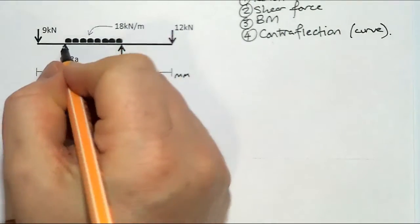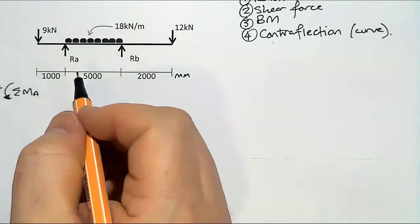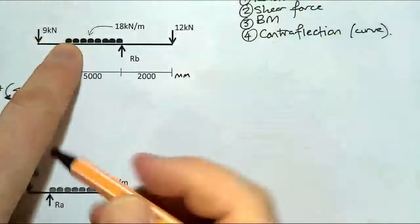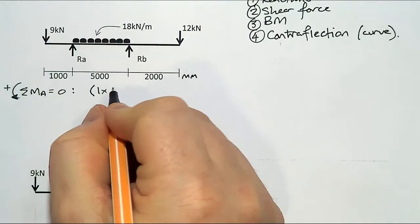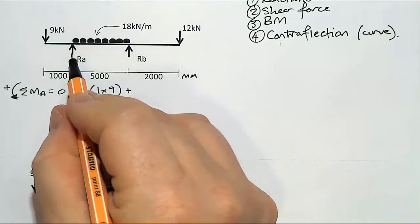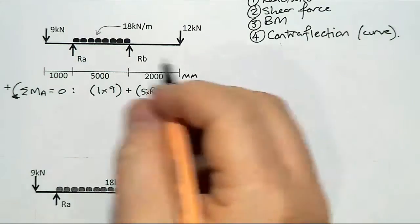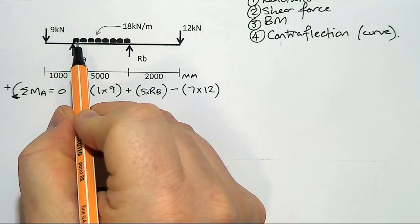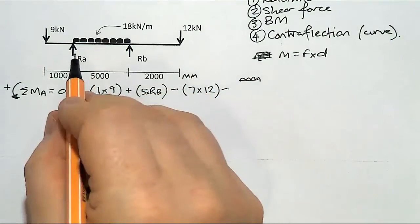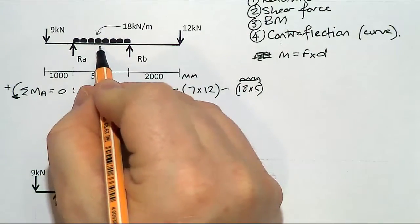For the reactions, I'll take moments around A, and I'm going to say that everything going anticlockwise is positive. The 9 kN load takes the beam anticlockwise, so that's 1 times 9. RB also takes it anticlockwise, giving 5 times RB. Going the other way, we have 7 times 12. For the UDL, moment is force times distance, so the force is 18 times 5, acting halfway, and all of that equals zero.